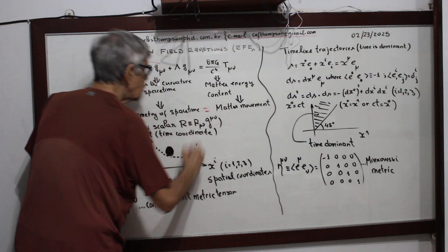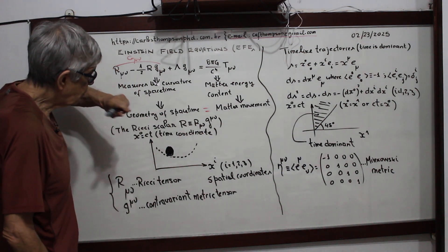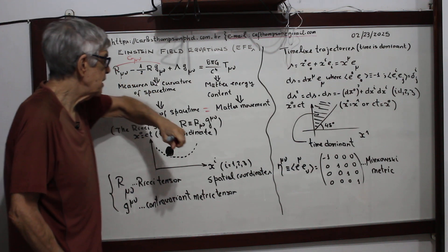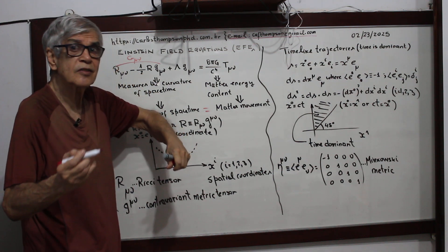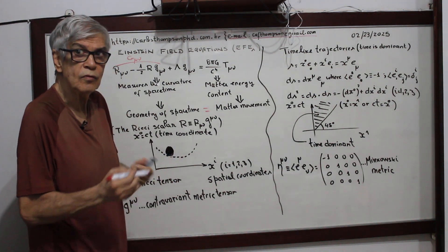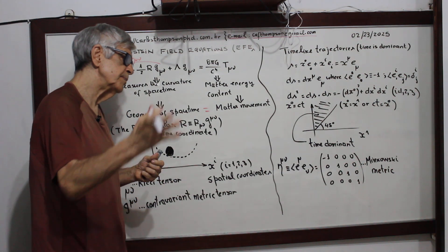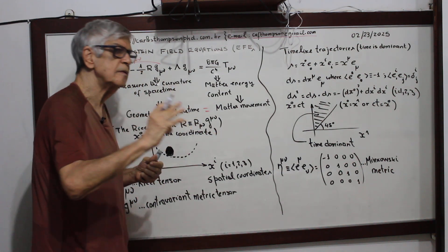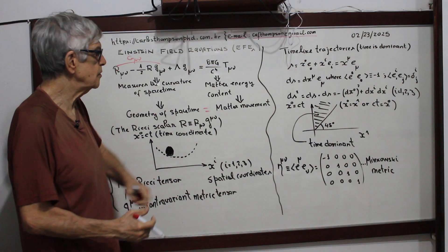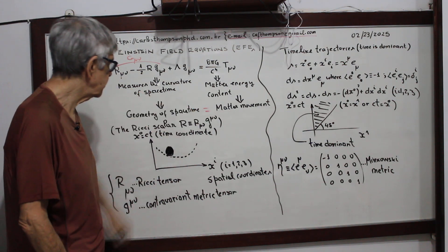I'll put an equal sign here. As I said before, space-time tells matter how to move. On the other hand, matter tells space-time how to curve. That's why we have an equal sign connecting them.